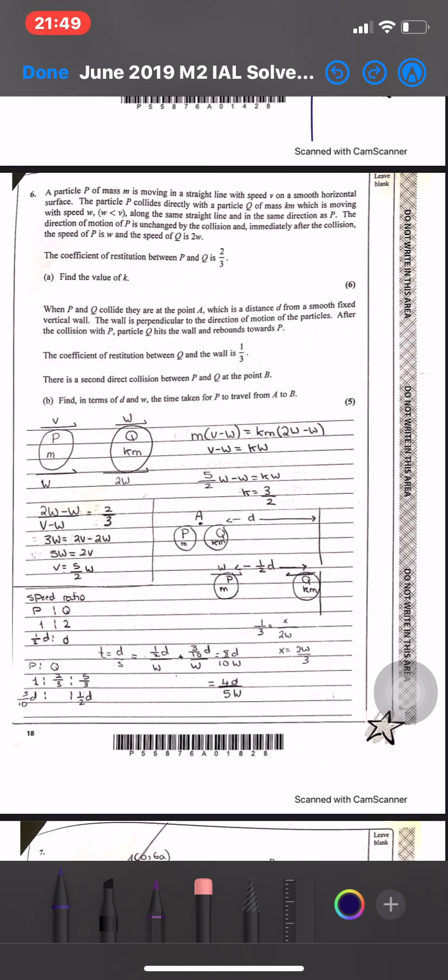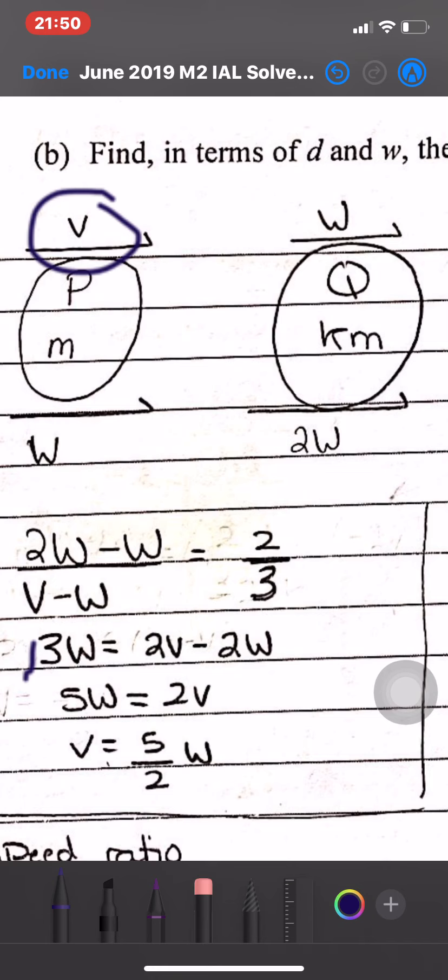He said E equals 2 over 3, and he wanted the value of K. First, E equals 2 over 3. E equals 2W minus W over V minus W. It's V minus W and not W minus V because V is more than W. If we take the same direction, so it equals 2 over 3.